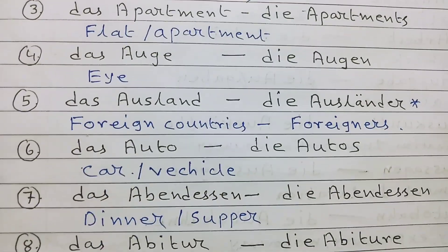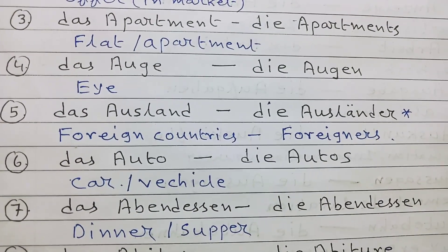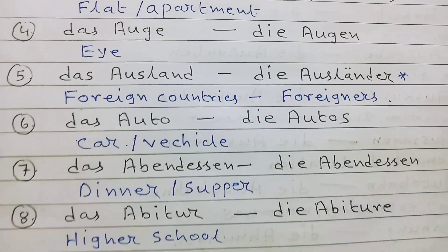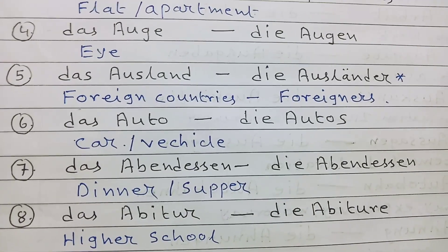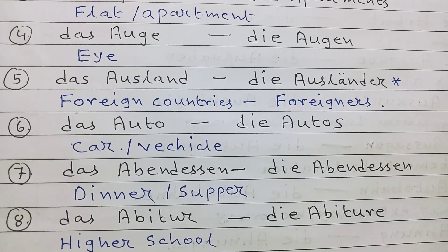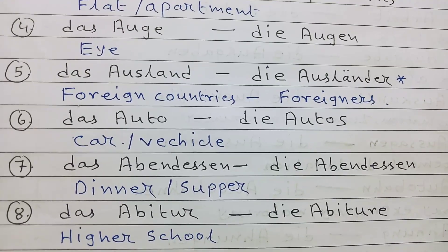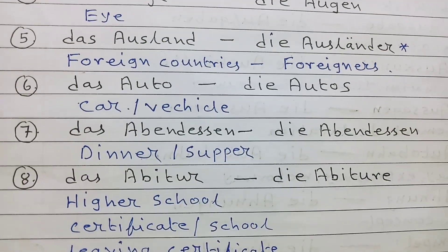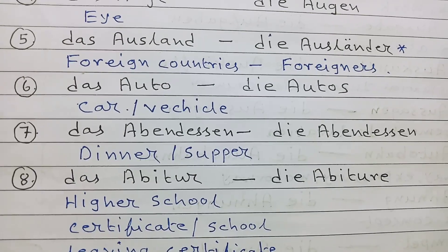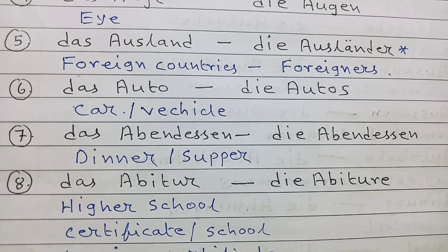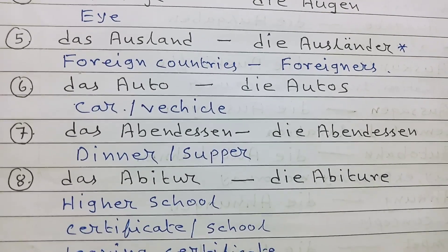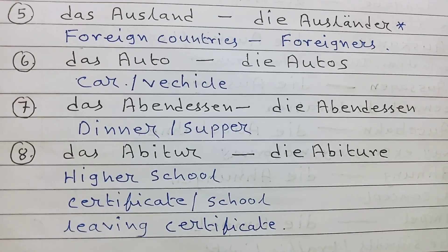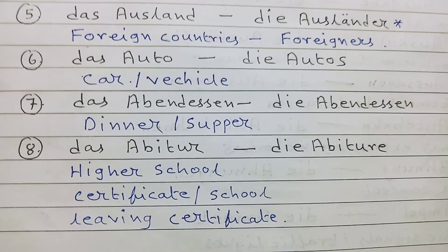Number 6: das Auto, die Autos — car, vehicle. Number 7: das Abendessen, die Abendessen — dinner or supper. Number 8: das Abitur, die Abiture — high school certificate, school leaving certificate.